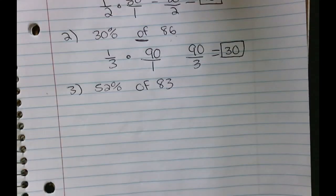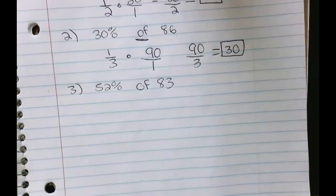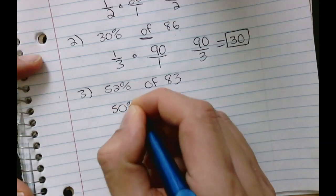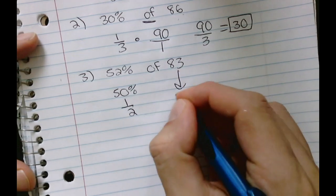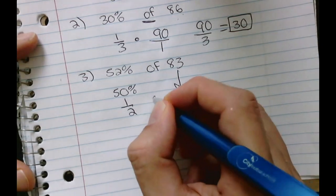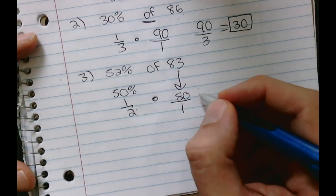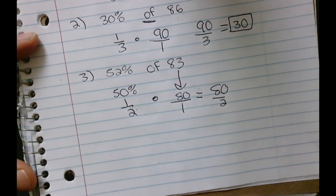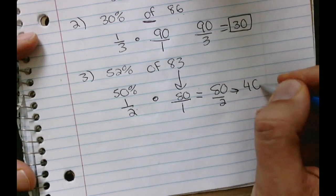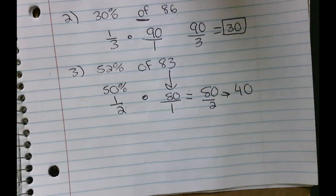Let's continue with number 3. 52% of 83. So 52% from my little cheat sheet here, that's about 1 half or 50%. So I'm going to convert that into a fraction and get 1 half. So a compatible number would be 80. And I'm going to times it. So 1 times 80 is 80, and then 2 times 1 is 2. And I can simplify that to 40. So when we estimate, we can say that 52% of 83 is 40.